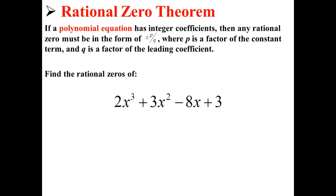For example, let's find the rational zeros of 2x to the third plus 3x squared minus 8x plus 3.